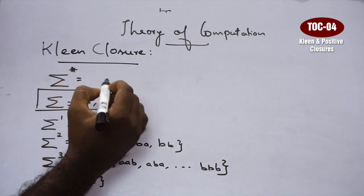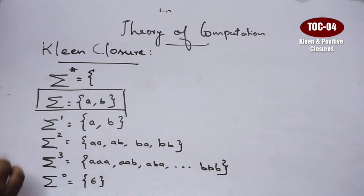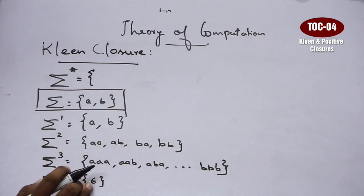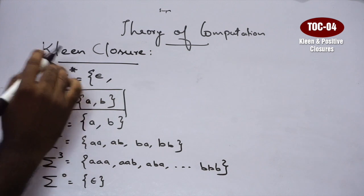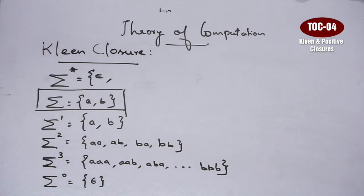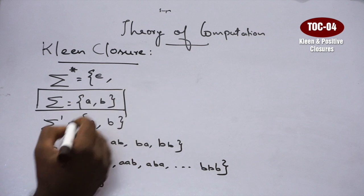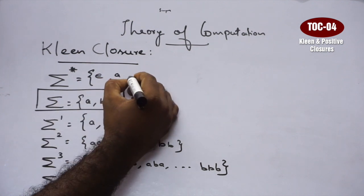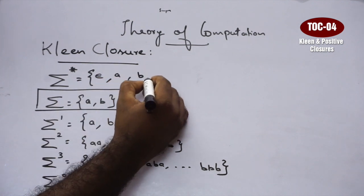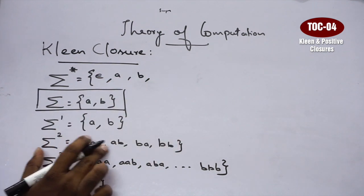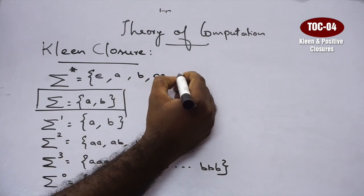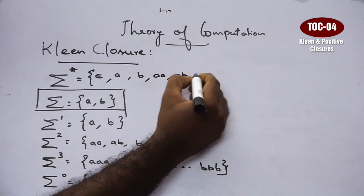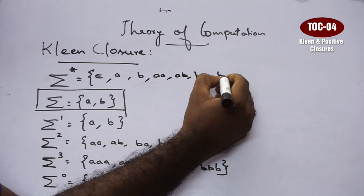Kleene closure starts with string of length 0. First, we will put Epsilon. The alphabet is {A, B}. String of length 0: Epsilon. String of length 1: A, B. String of length 2: the whole set is AA, AB, BA, BB.